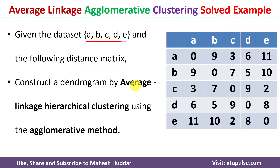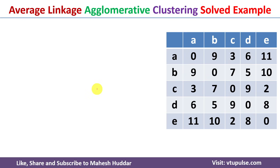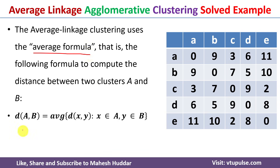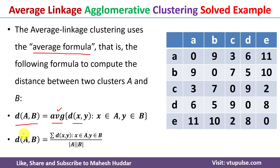Given this distance matrix, we need to apply average linkage hierarchical clustering with the agglomerative method and then create the different clusters. Finally, we need to draw the dendrogram. Since we are using the average linkage agglomerative clustering algorithm, we use the average formula: the distance between two clusters A and B equals the average of distances d(x, y) where x is in the first cluster and y is in the second. We add all those distances and divide by the number of data points in the first cluster multiplied by the number in the second cluster. This is the formula used to update the distance matrix at each stage.